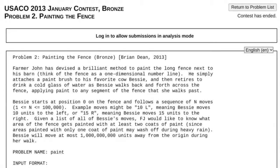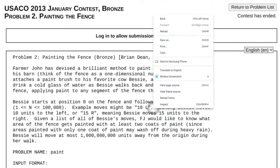Hi everyone! In this video, I will be going over the USACO problem 'Painting the Fence' from the 2013 January Bronze contest, problem number two. Let me begin by summarizing the problem statement. Basically, Bessie the cow has a paintbrush attached to her, and she moves left to right and vice versa across a fence. Her moves are given in a format where we're given a number and then a letter — the number represents the units Bessie moves, and the letter refers to the direction.